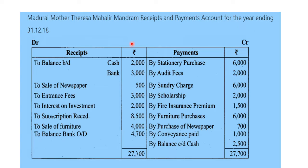Receipt and payment account for the year ending 31-12-2018 — debit side and credit side. Now, for the receipt side: opening balance — opening cash is $2,000, opening bank is $3,000.